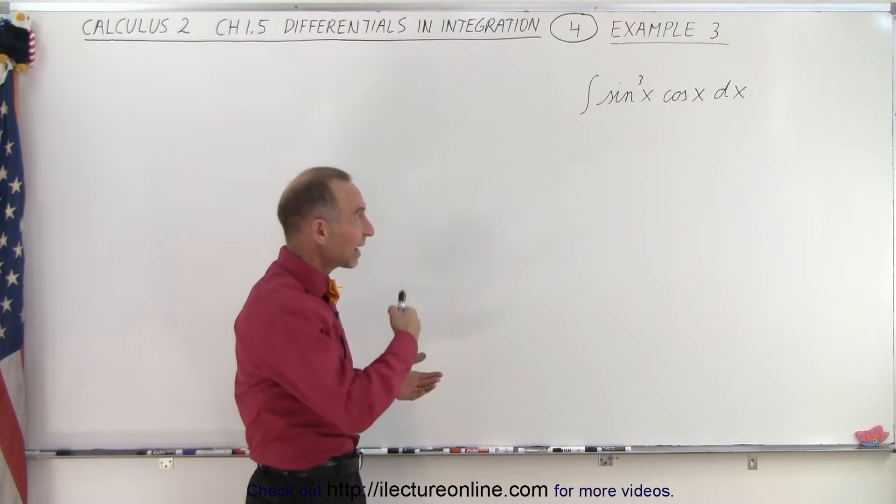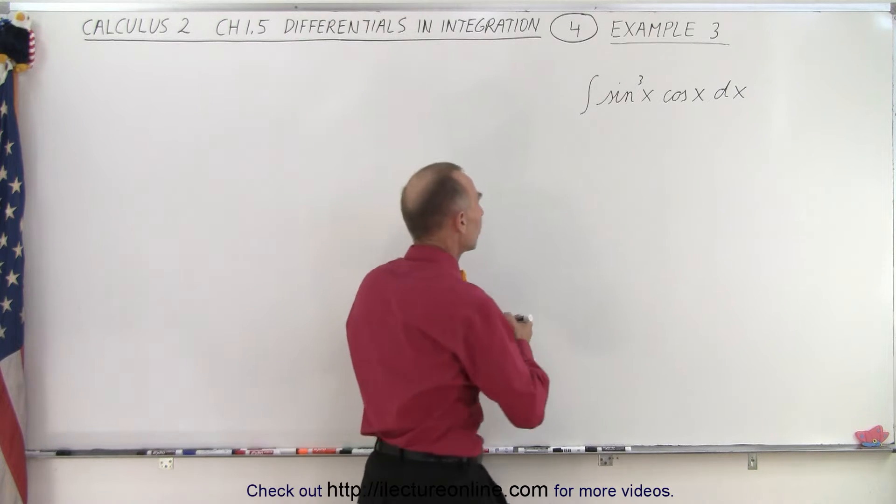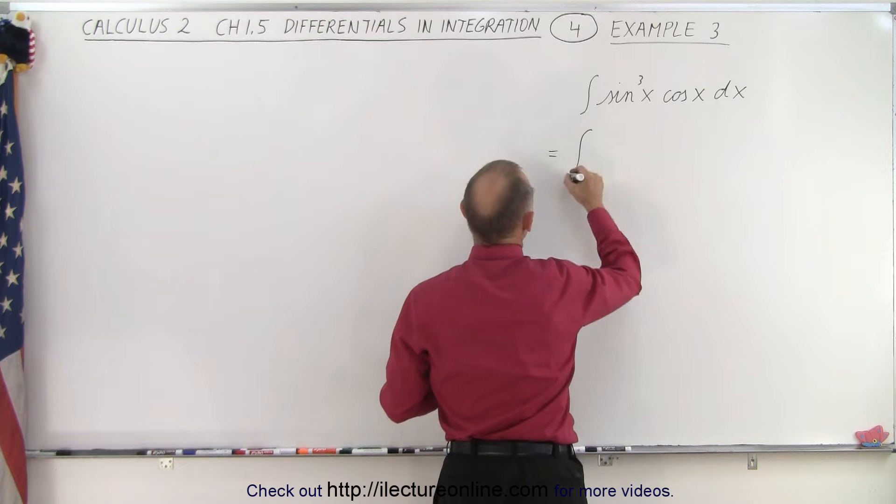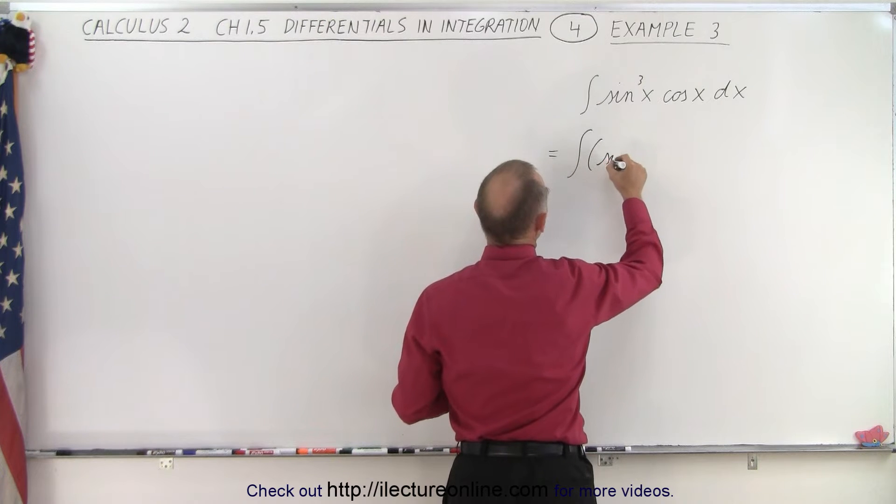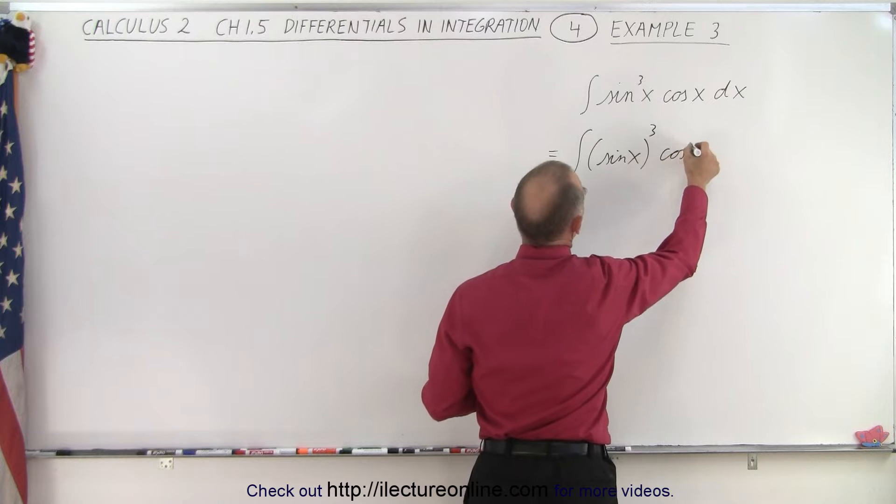Whenever we see something like sine cubed of x, sometimes it's better to write it differently, so we use parentheses like this. We'll rewrite it. We write it as the quantity sine of x, quantity cubed, times the cosine of x dx.